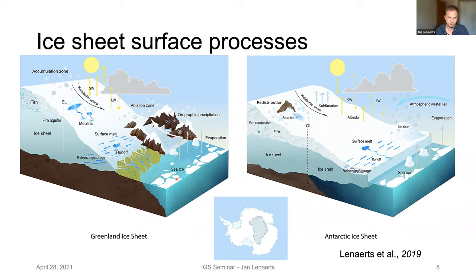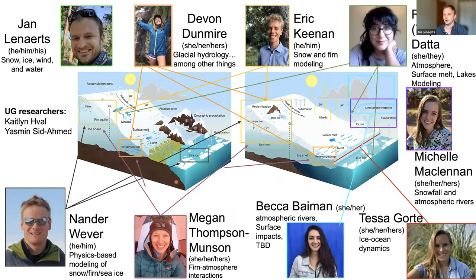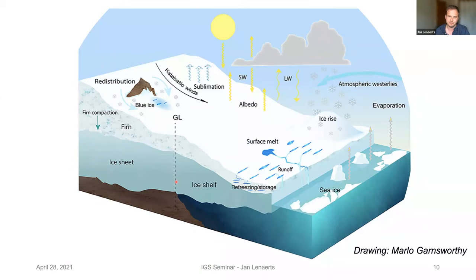All of these processes are important. Some of them are more important on Greenland than Antarctica. For the purpose of this talk, I will focus on only three of those processes. In our research group, I'm leading a group of 10 students, postdocs, and myself, focused on a variety of these surface process issues. For the next 35 or 40 minutes, I will lead you on a journey from the ice sheet interior — focusing on the Antarctic ice sheet — from the ice sheet interior to the ice sheet coast, starting high in elevation and moving down towards the coast as time evolves in this talk.